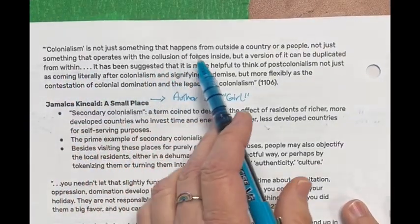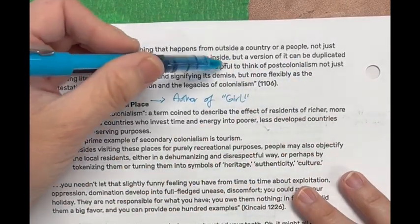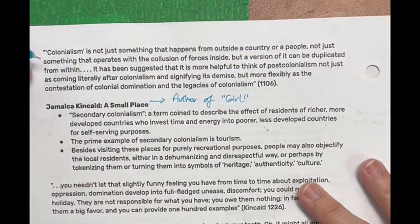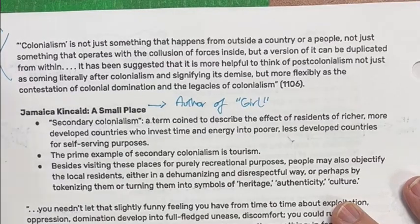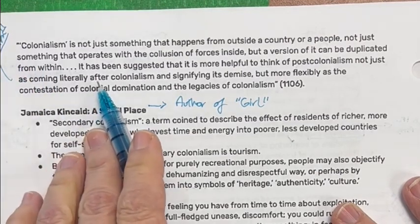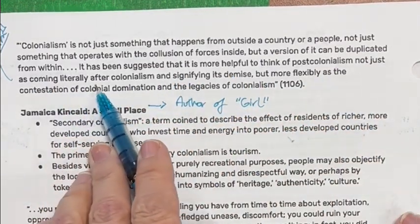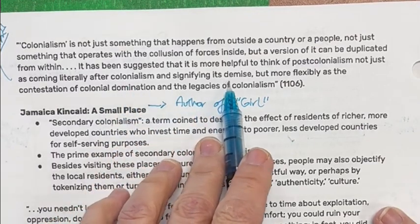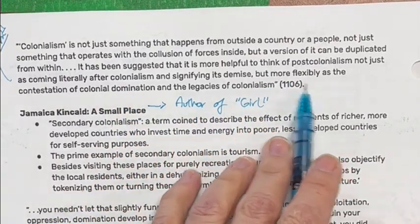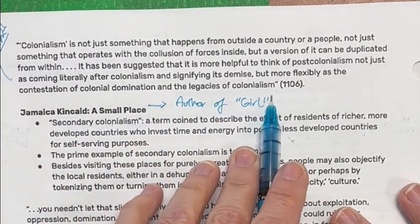Colonialism is not just something that happens from outside a country or people, not just something that operates with the collusion of forces inside — a version of it can be duplicated from within. So there is internalized and internal colonialism. It has been suggested that it is more helpful to think of post-colonialism not just as coming literally after colonialism and signifying its demise, but more flexibly as the contestation of colonial domination and the legacies of colonialism.